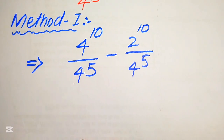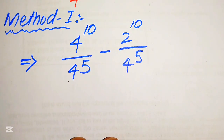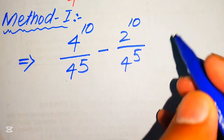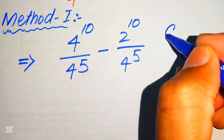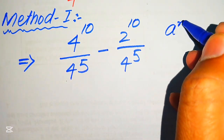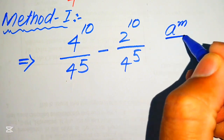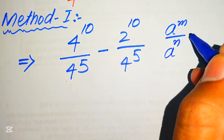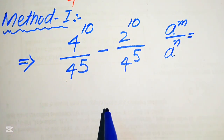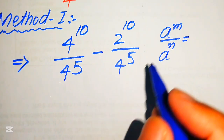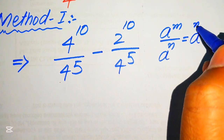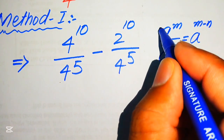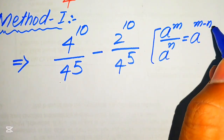In the next step we apply the exponent law: if you have a to the power of m divided by a to the power of n, it equals a to the power of m minus n.